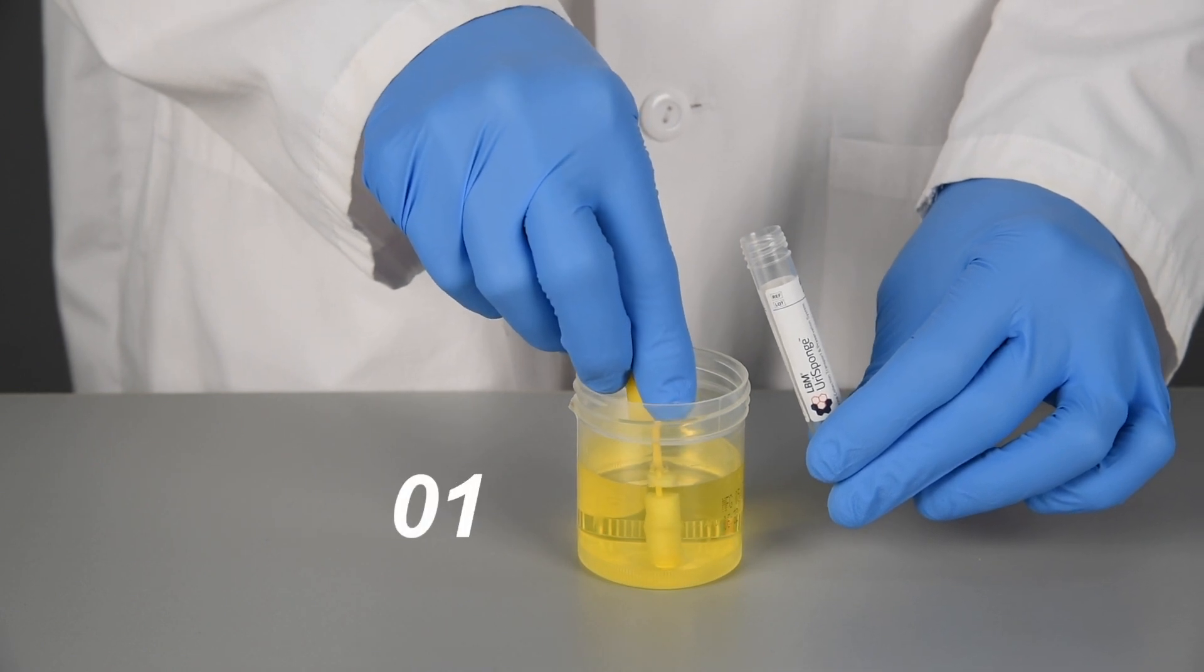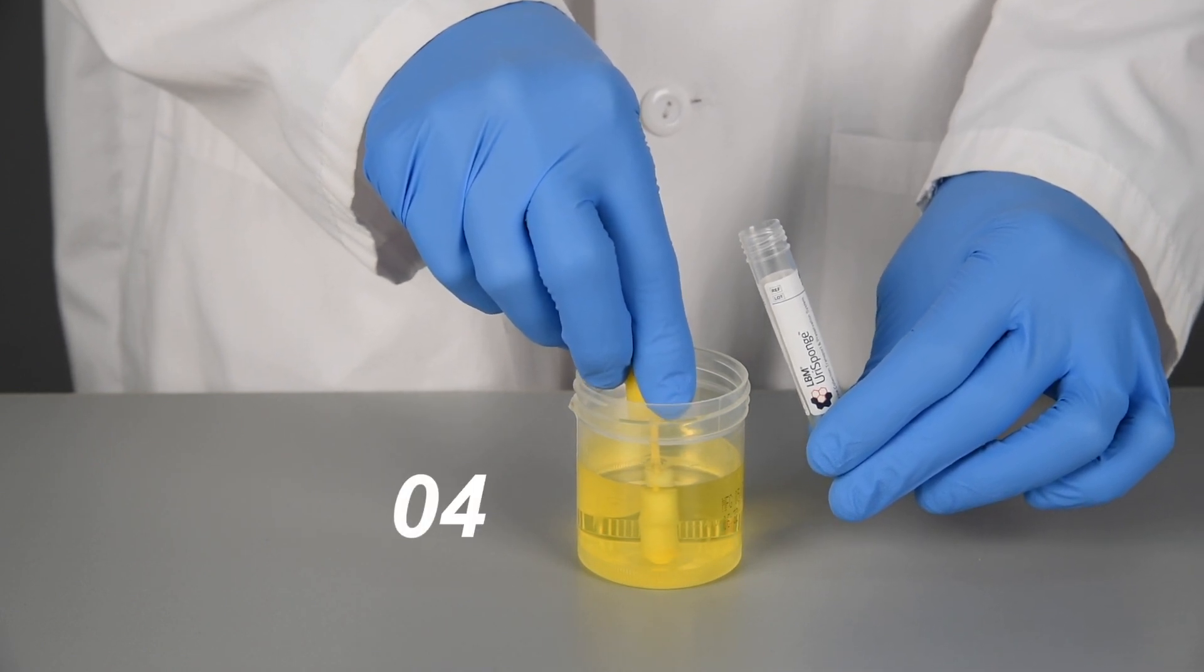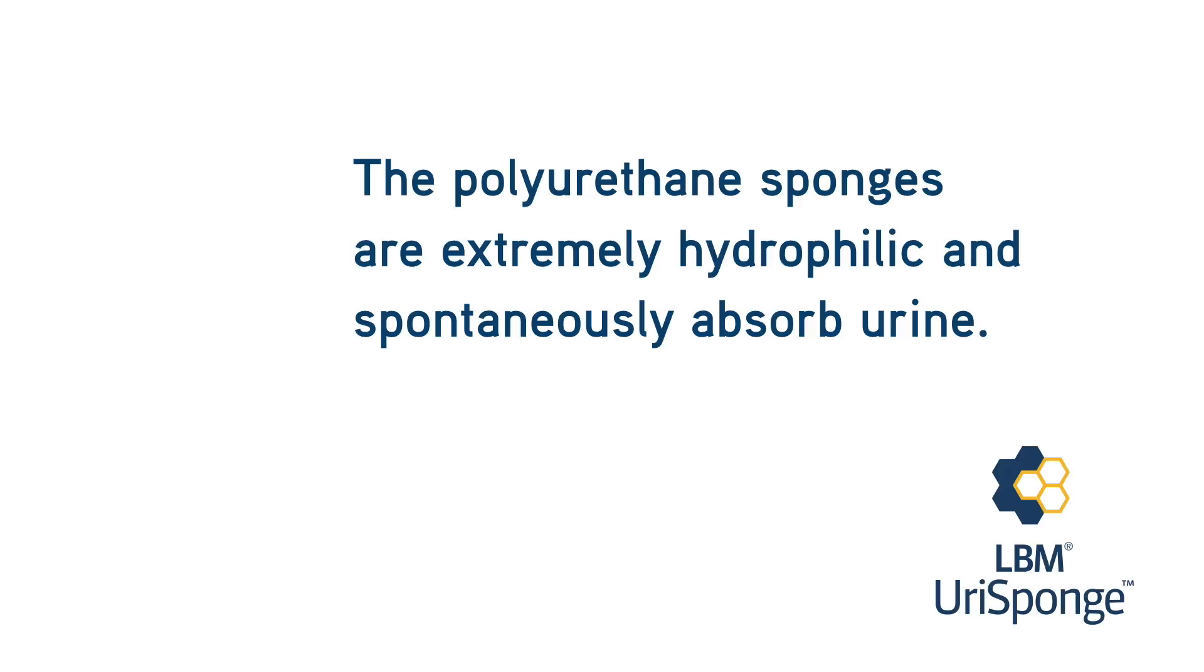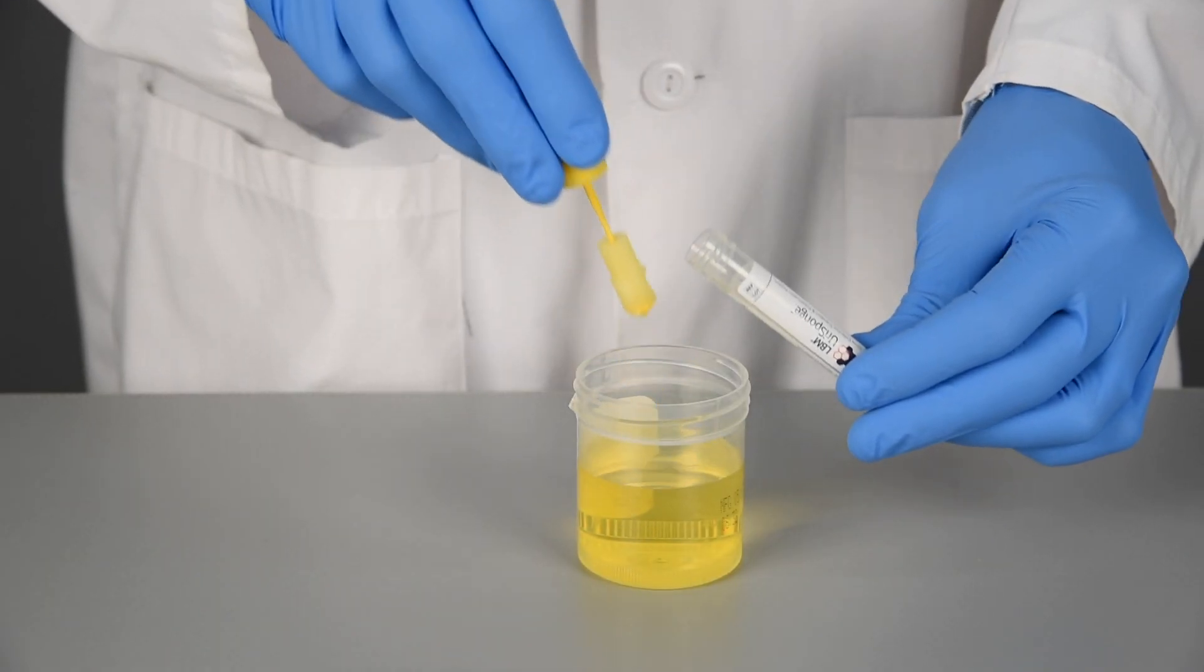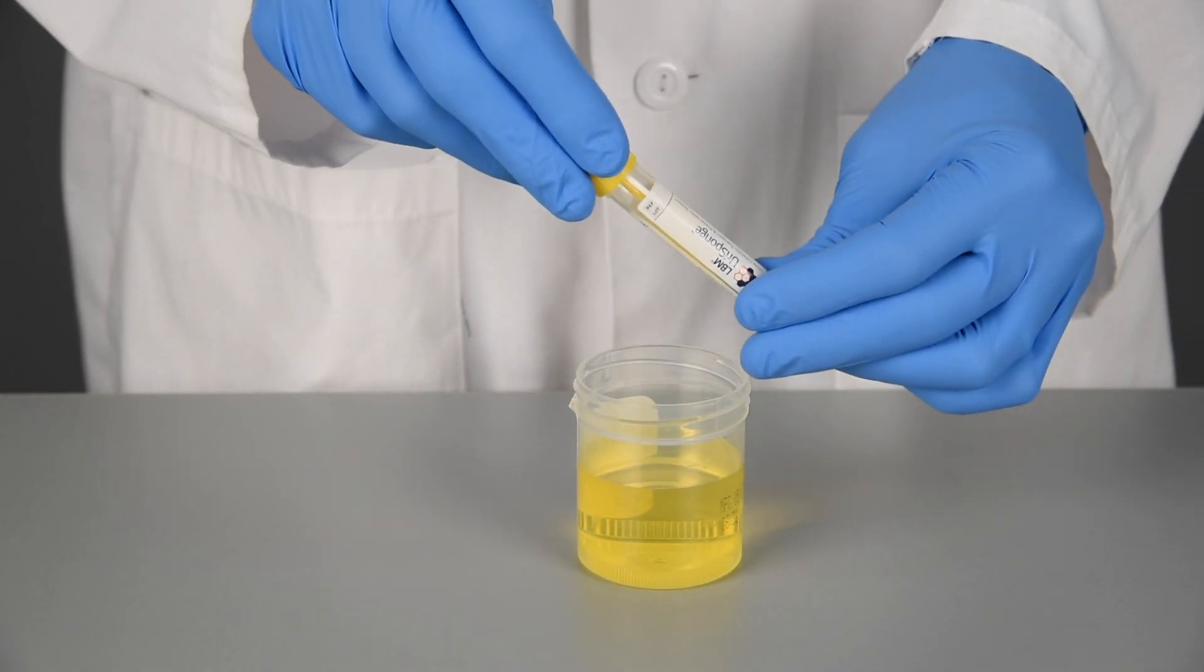Submerge the sponges for five seconds. The polyurethane sponges are extremely hydrophilic and spontaneously absorb urine. Remove the sponge applicator from the urine sample and return it to the UriSponge tube. Do not add urine to the tube other than the urine spontaneously absorbed by the sponge.